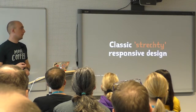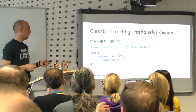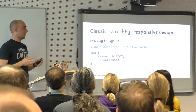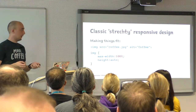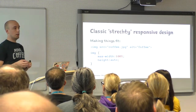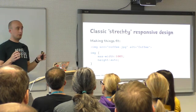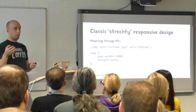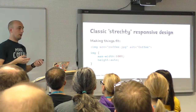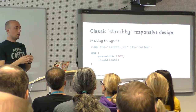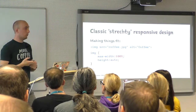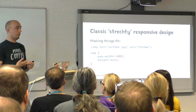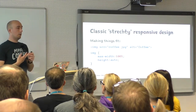The other problem is classic stretchy responsive design, where we give an image 100% max width so it fills whatever size it's on. That works visually, but if you have a giant background image on a 27-inch screen and the same page is visited on an Android phone from 2009, that phone has to download and process the same huge image and downscale it. The problem is twofold: it impacts the user's bandwidth, and it impacts the phone's battery life.